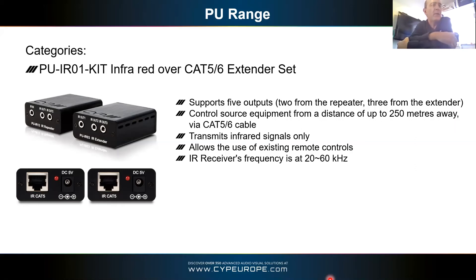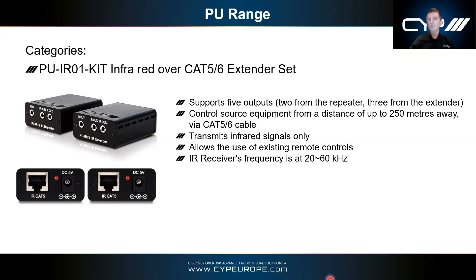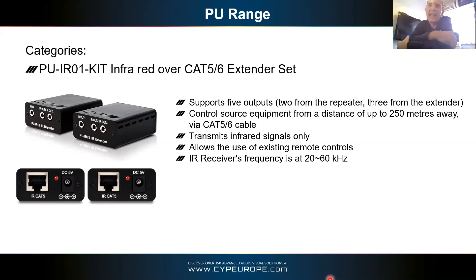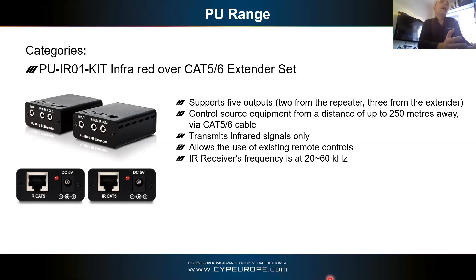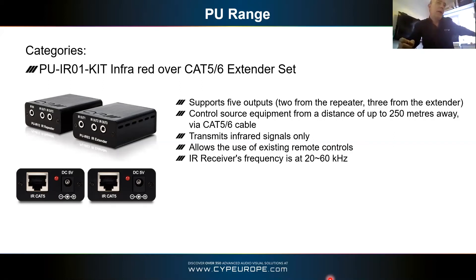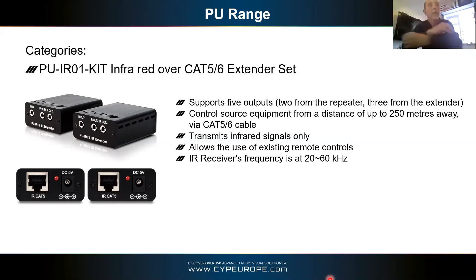There's also the PU-232, which is RS232 serial over CAT — up to approximately 250 meters. These are very popular at the moment in retail environments. For example, a till with RS232 output that now needs to be located 100 meters away can use an existing CAT cable already run through the floor. We've been selling quite a few into retail environments needing to extend RS232 to a new location.